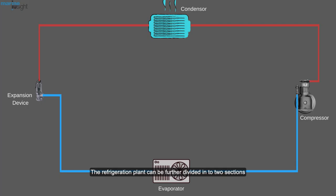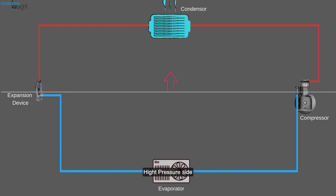The refrigeration plant can be further divided into two sections: high pressure side and low pressure side.